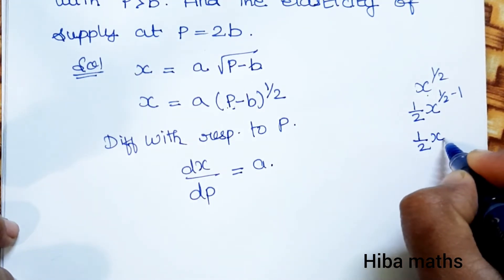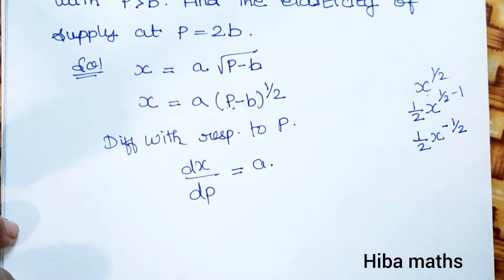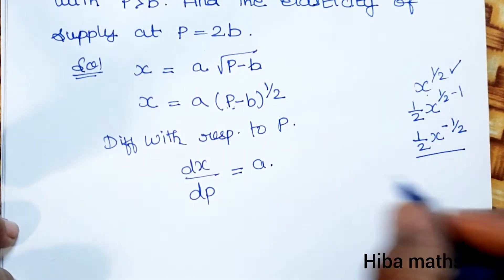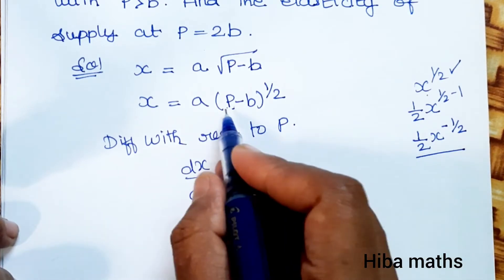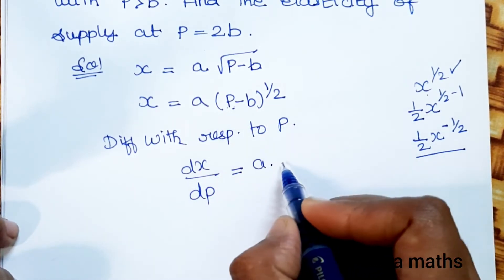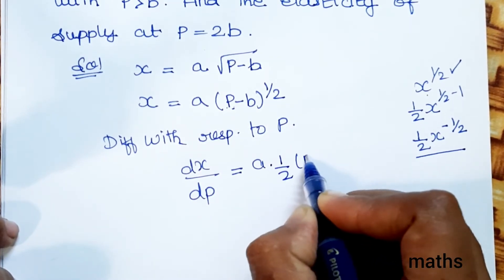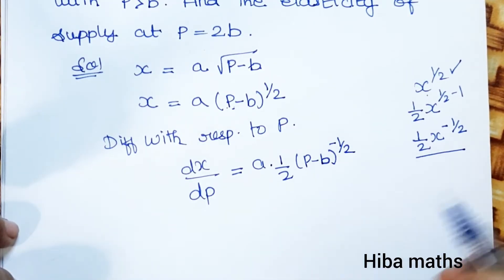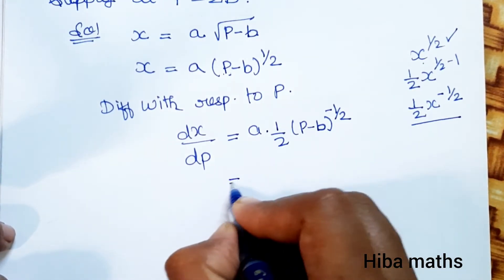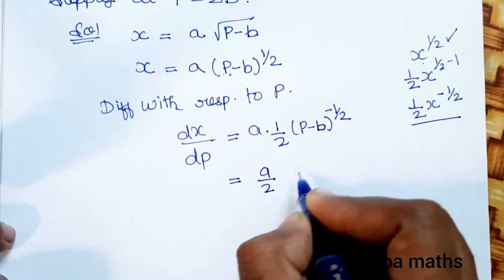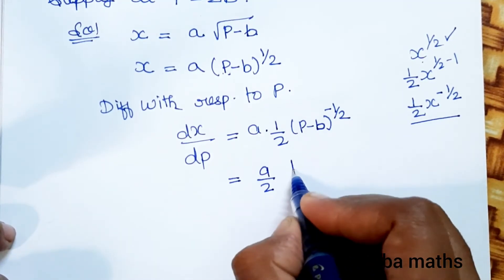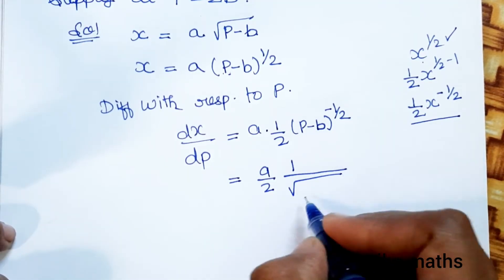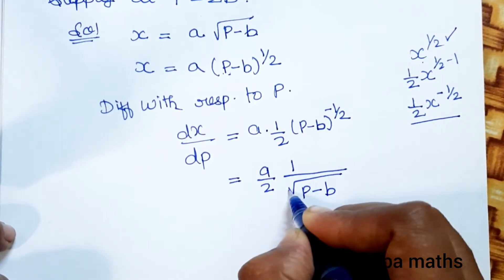So dx by dp equals a times (p minus b) to the power minus 1 by 2, which simplifies to a divided by 2 root of (p minus b).